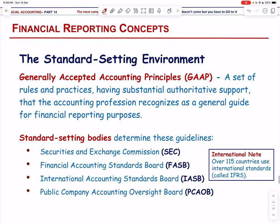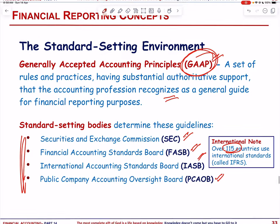Financial reporting concepts begin with GAAP — a set of rules and practices having substantial authoritative support that the accounting profession recognizes as a general guide for financial reporting. More than 115 countries use IFRS. The standard-setting bodies include the Securities and Exchange Commission (SEC), the Financial Accounting Standards Board (FASB), the International Accounting Standards Board (IASB), and the Public Company Accounting Oversight Board (PCAOB).